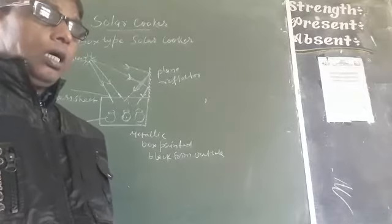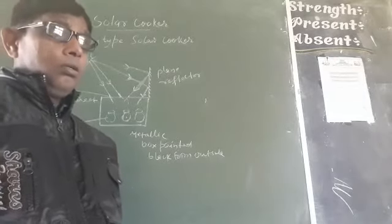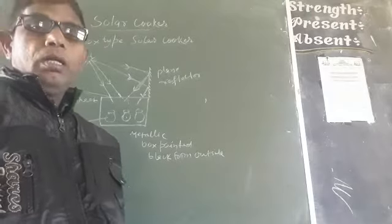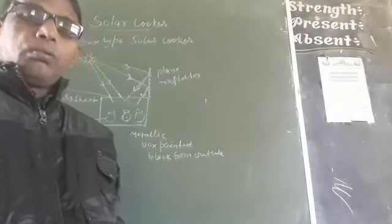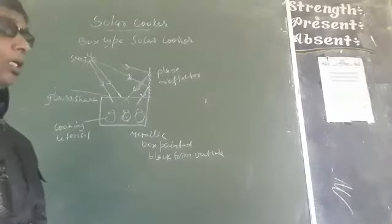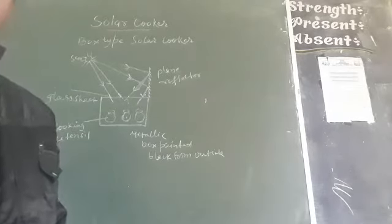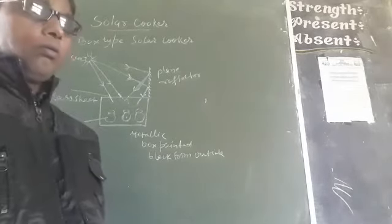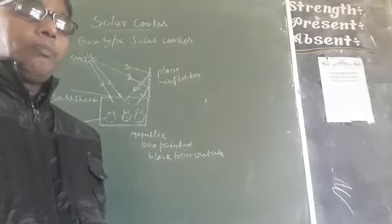Today I am going to explain solar cooker. There are two types of solar cooker: box type solar cooker and concave reflector type solar cooker.